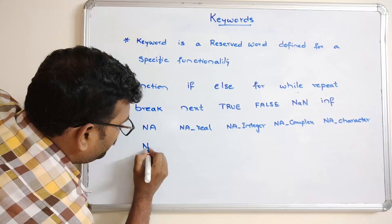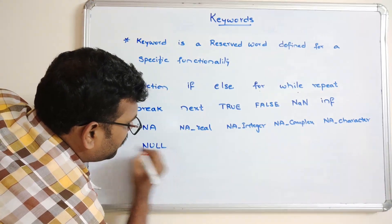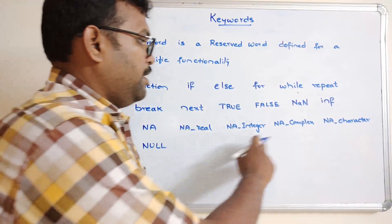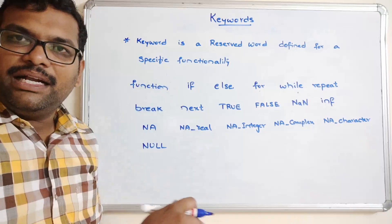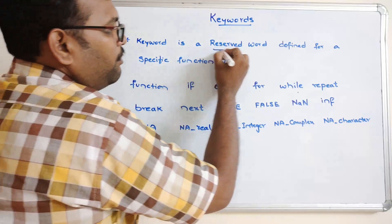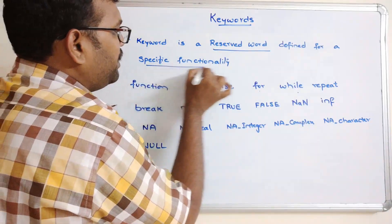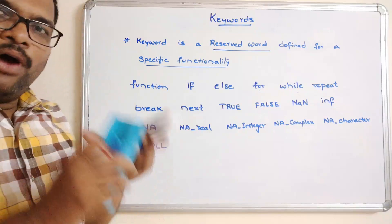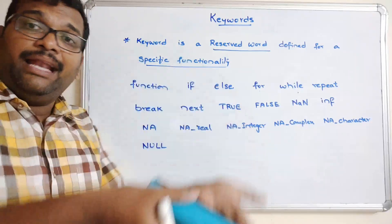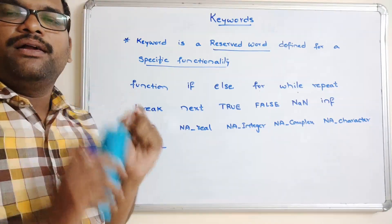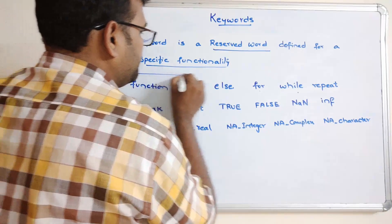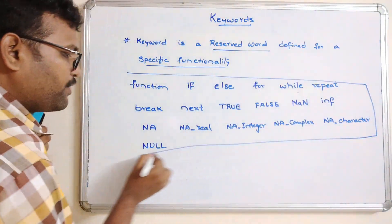One more keyword is 'NULL', which is called a Null object. These are all the different keywords available in R programming — reserved words defined for specific functionality. For example, if you want to define a user-defined function, you must use the keyword 'function' and should not use it for any other purpose. These are all the keywords available in the language.